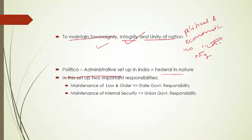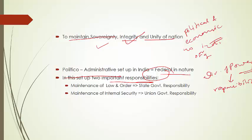The political administrative setup in India is federal in nature. The concept of federation is based on division of powers, and with powers come responsibilities. It brings division of responsibilities between the central government at the union level and the state government at the state level. Maintenance of law and order is the state government's responsibility, while maintenance of internal security is the union government's responsibility.